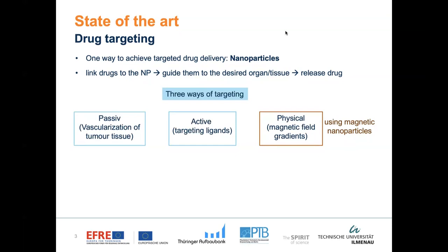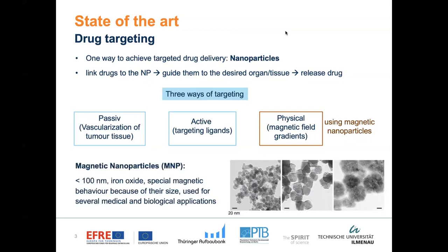For us, the most interesting way of targeting is physical targeting. That means we are using magnetic nanoparticles and we can guide these particles by magnetic forces to the site of the disease. Such particles mostly consist of iron oxides, in the size below 100 nanometers, typically in the size of 10 to 30 nanometers. These particles are very interesting for different applications in diagnostics and therapy in medicine.